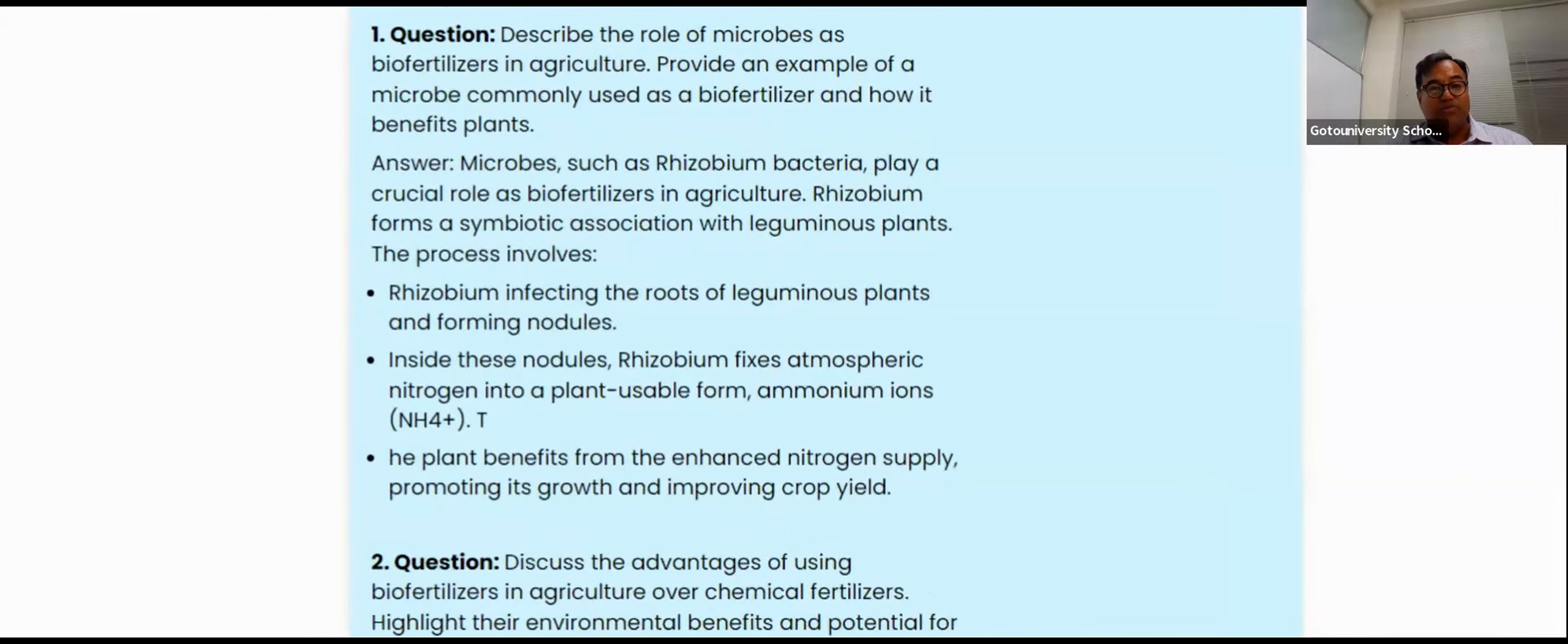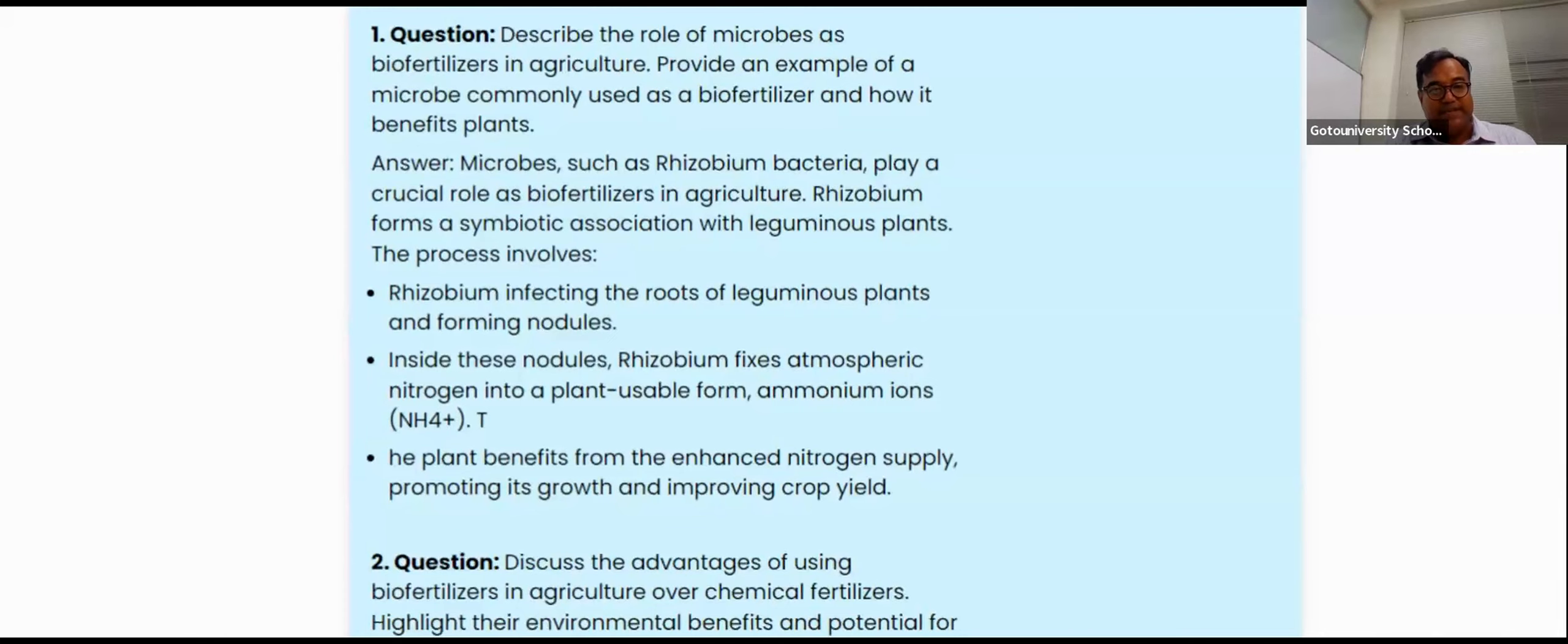Whenever they are asking the role of microbes, we need to give an example. Rhizobium example will be given very nicely and then after Rhizobium example, what we need to give is basically we need to say how the Rhizobium works. And because of this work performance, how the application is extracted, everything we need to bring it. Answer, example, an explanation for the example should be narrated.